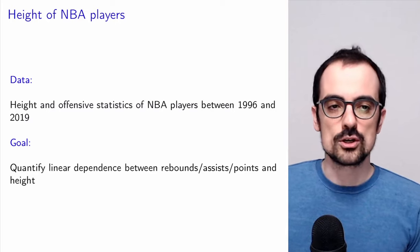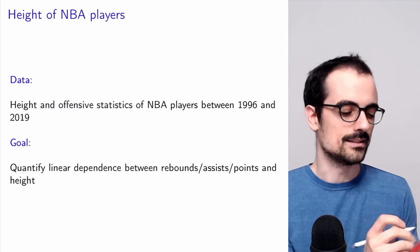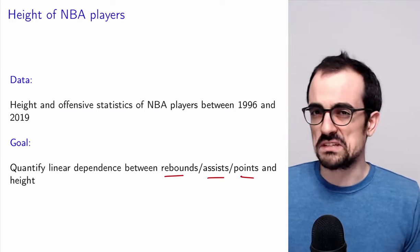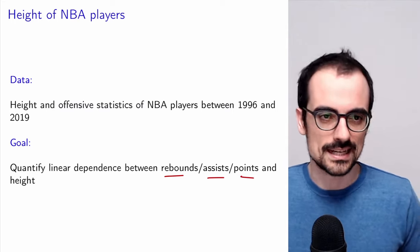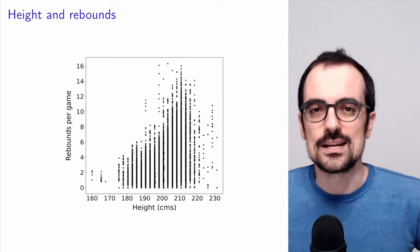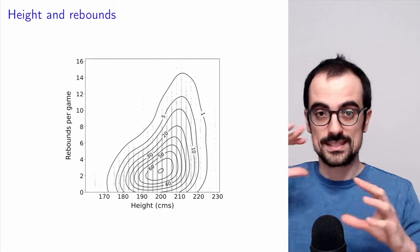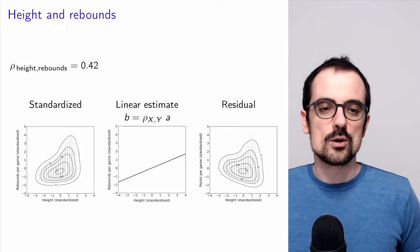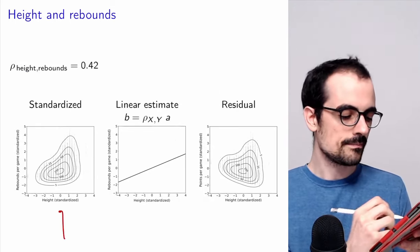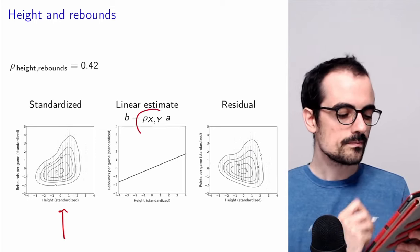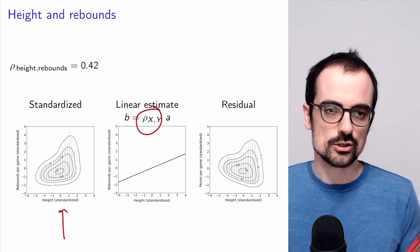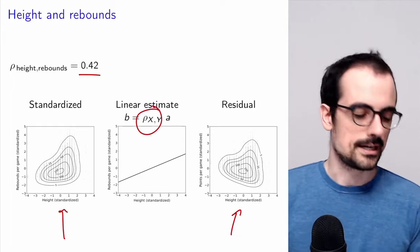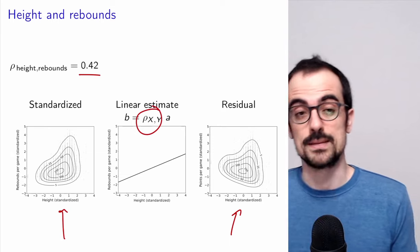Let's look at an example exploring the relationship between height and rebounds, assists, and points achieved by NBA players between 1996 and 2019. This is the scatter plot of height and rebounds, and this is the kernel density estimate where we can see better where all the points are, since many overlap. When we standardize the variables, we get this view, with a linear estimate whose slope equals the correlation coefficient — 0.42 in this case. This is the error we make when estimating rebounds using the linear estimate based on height.